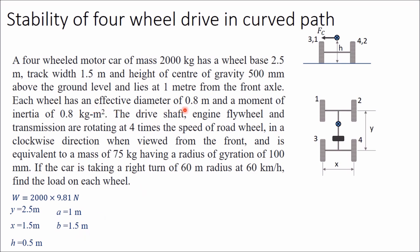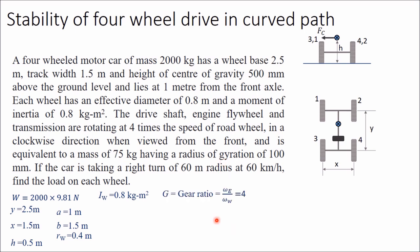Each wheel has an effective diameter of 0.8 meter, so the radius of the wheel will be 0.4 meter. The moment of inertia of each wheel is given as IW equal to 0.8 kg meter square. The drive shaft, engine, flywheel, and transmission are rotating at 4 times the speed of the road wheel, so the gear ratio G equals omega_e divided by omega_w, which is equal to 4.